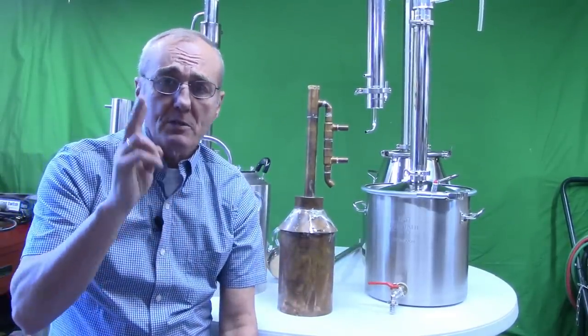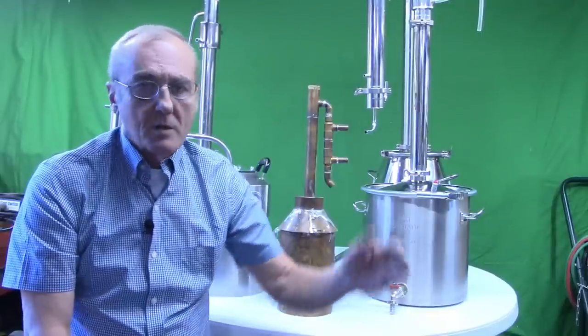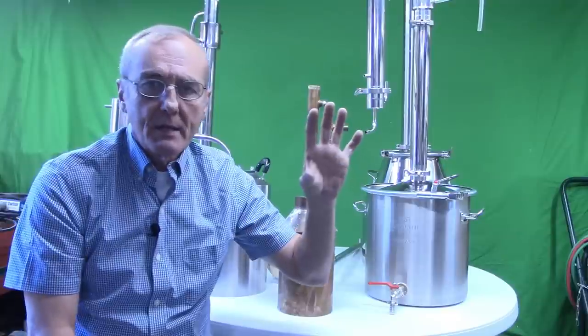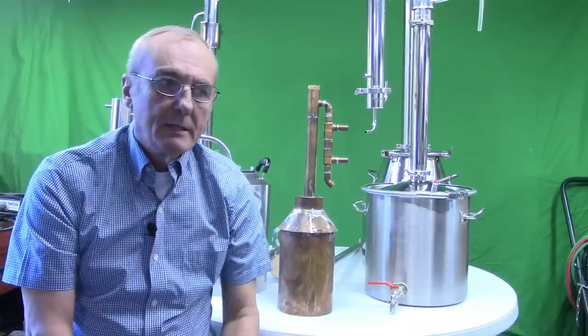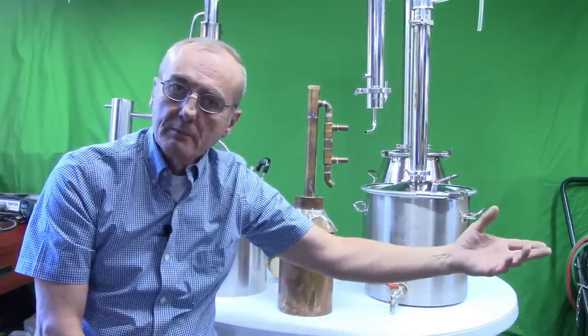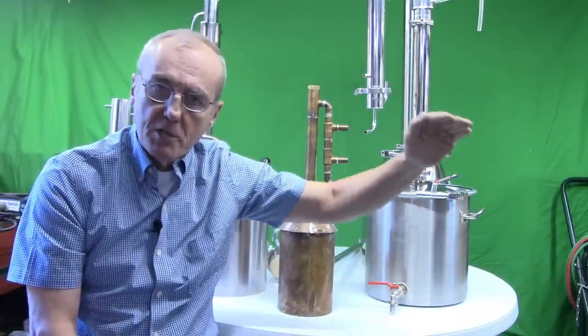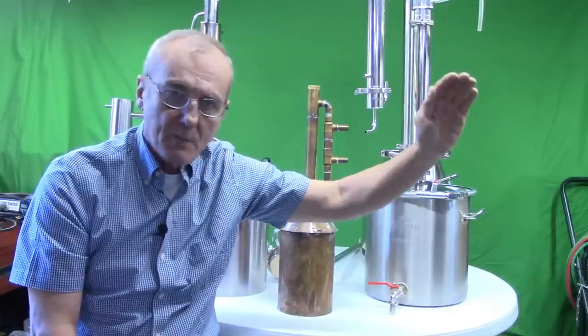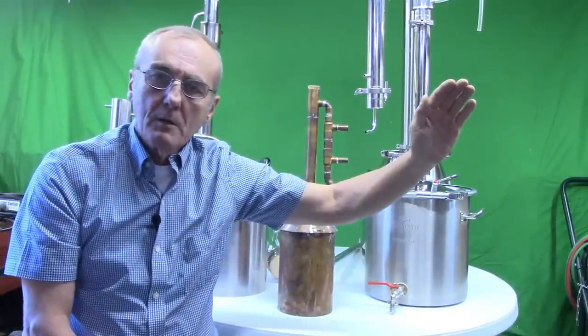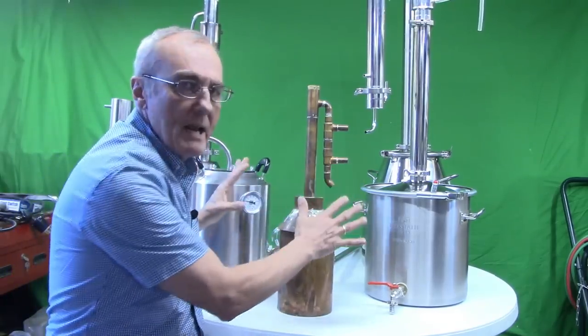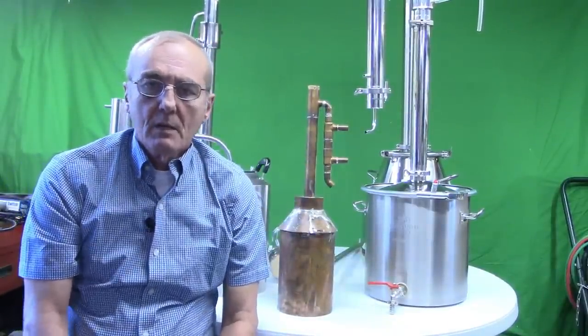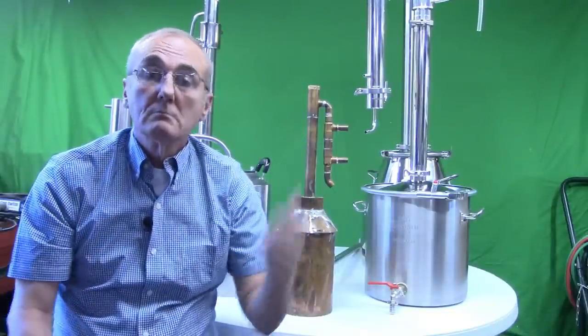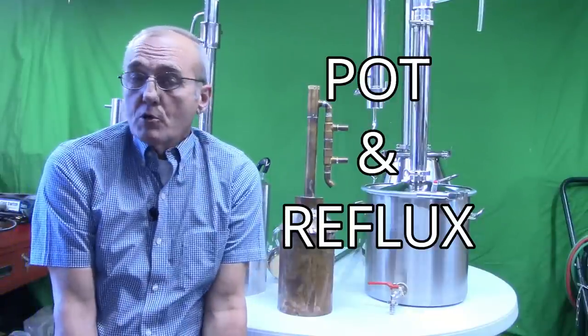There are two real basic types of stills. There's such thing as a fractionating column used in the petroleum industry, where you can pull off different fractions at different levels. But the two types we're concerned with are pot and reflux, and they both serve very useful purposes.